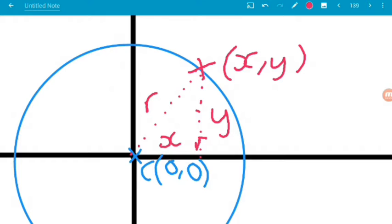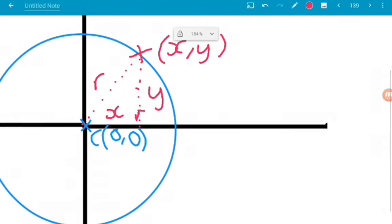Now by Pythagoras, we can say then that x squared plus y squared is equal to r squared, the radius squared.